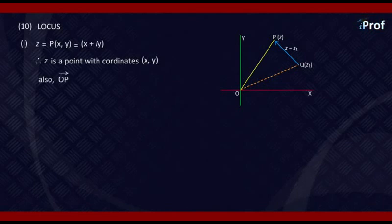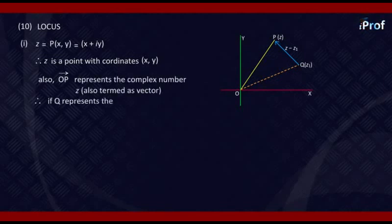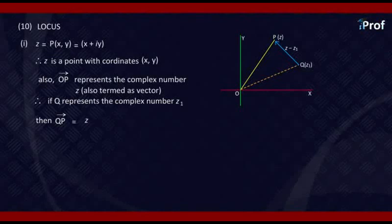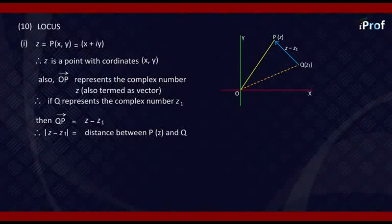Also, OP, which is in the form of a vector, represents the complex number z. If Q represents the complex number z₁, then the vector QP is represented by z - z₁. Also, the modulus |z - z₁| will represent the distance between P (which is z) and Q (which is z₁), that is PQ.